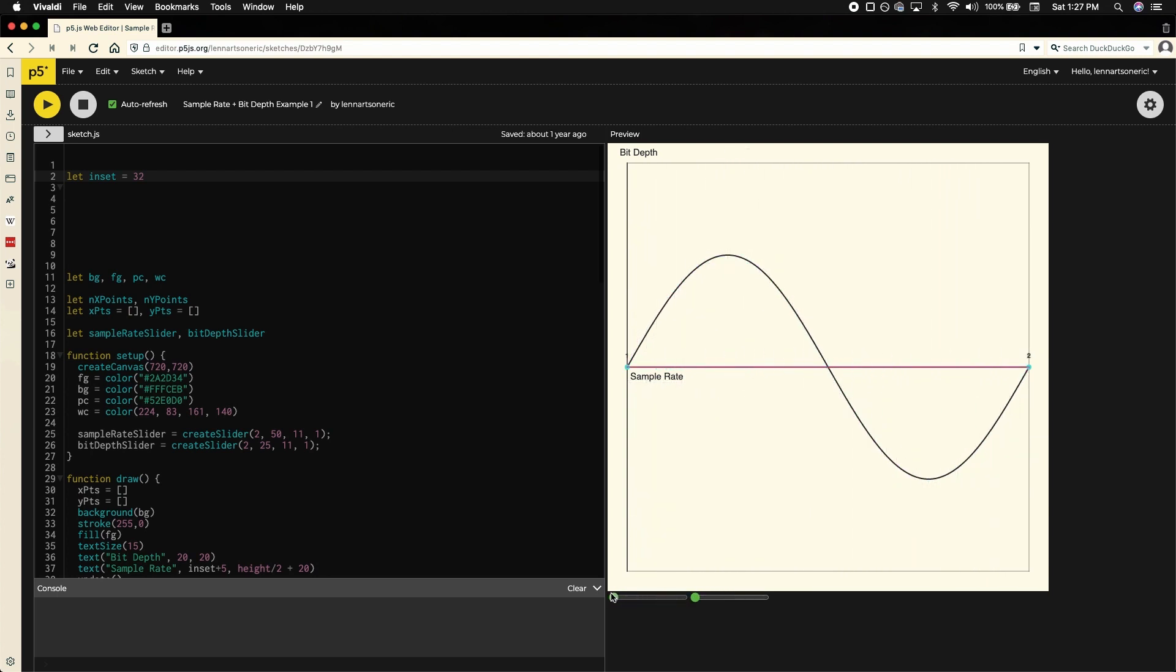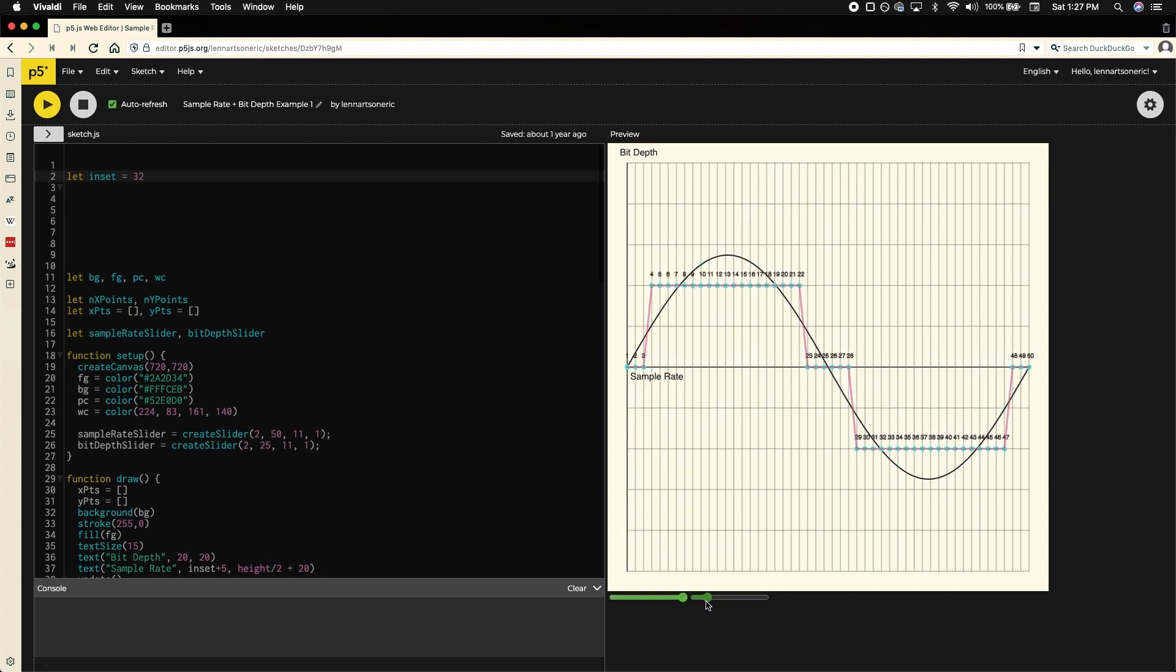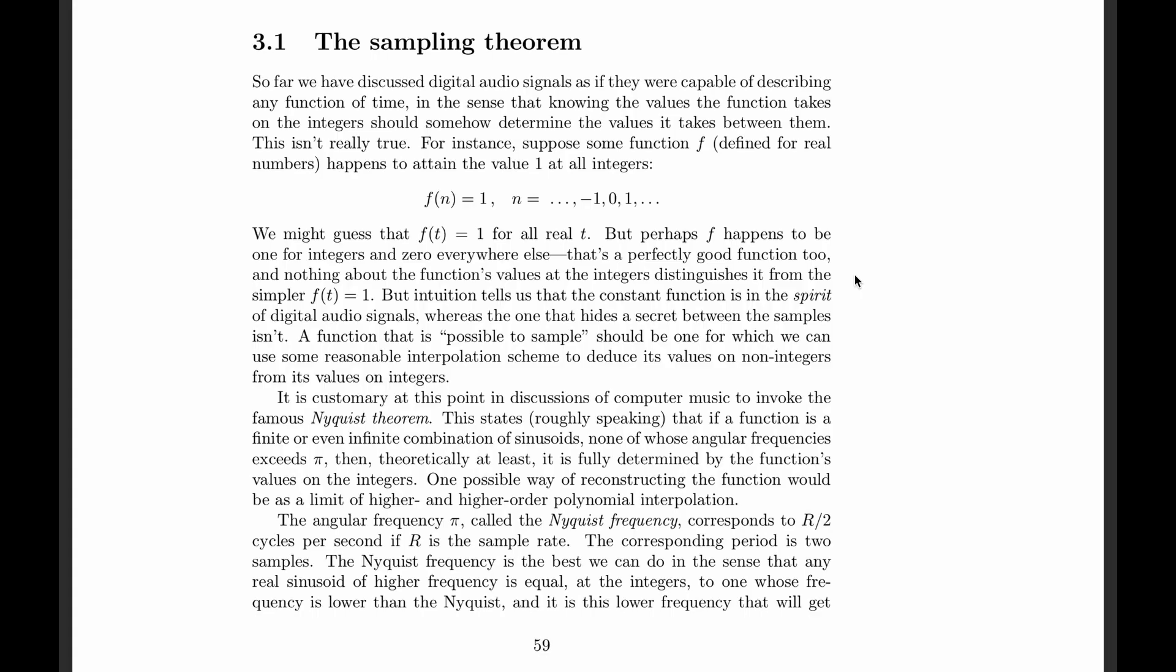In general, good quality audio uses a sample rate of at least 44.1 kHz and a bit depth of 16. But why do we use sample rates of 44.1 kHz or higher? To understand that, we'll need to understand the Nyquist frequency.